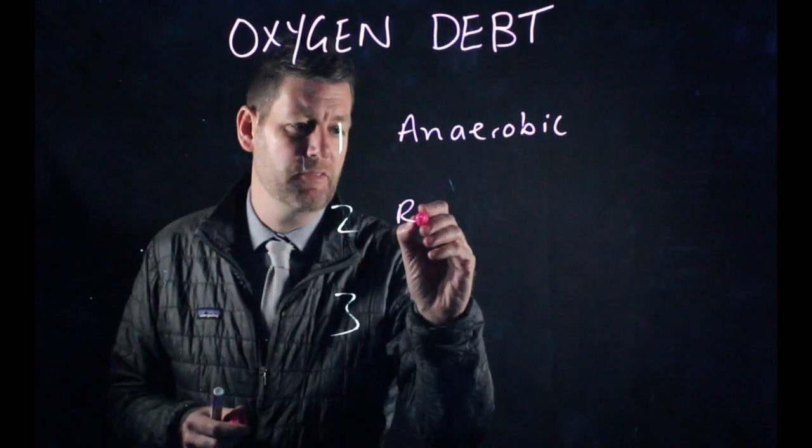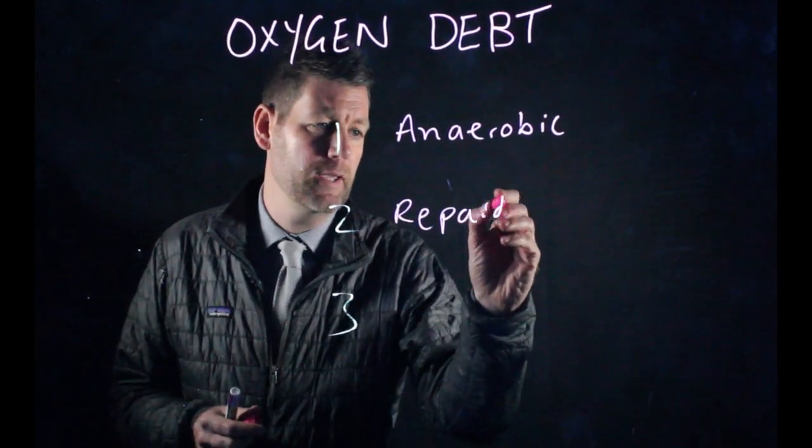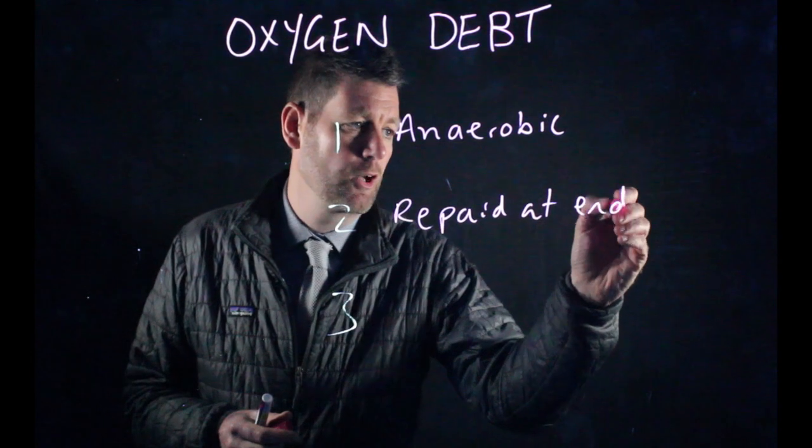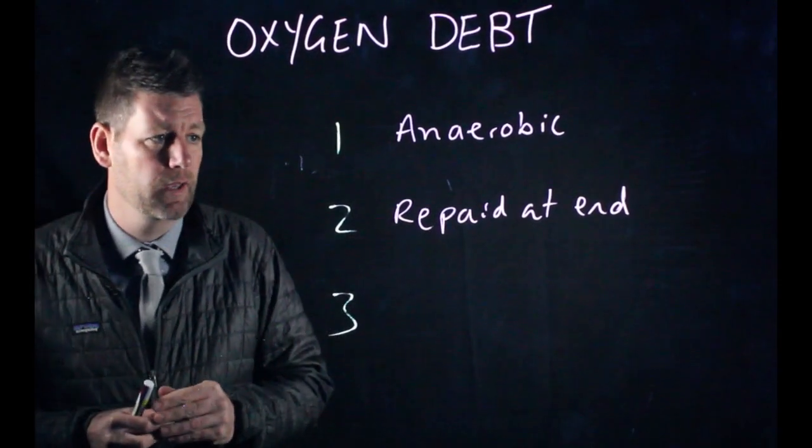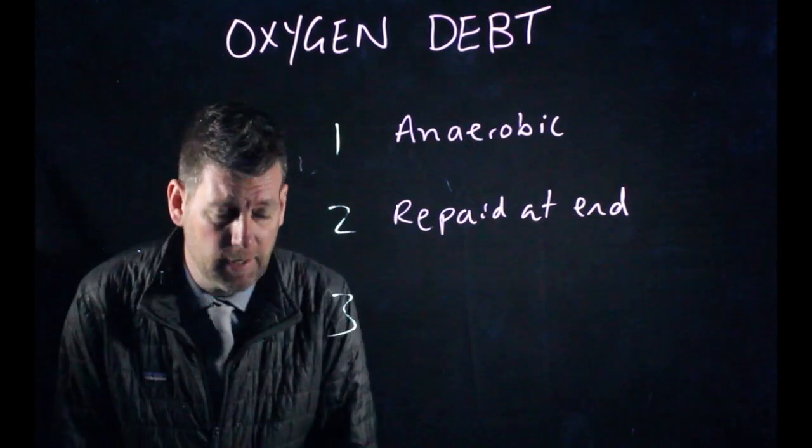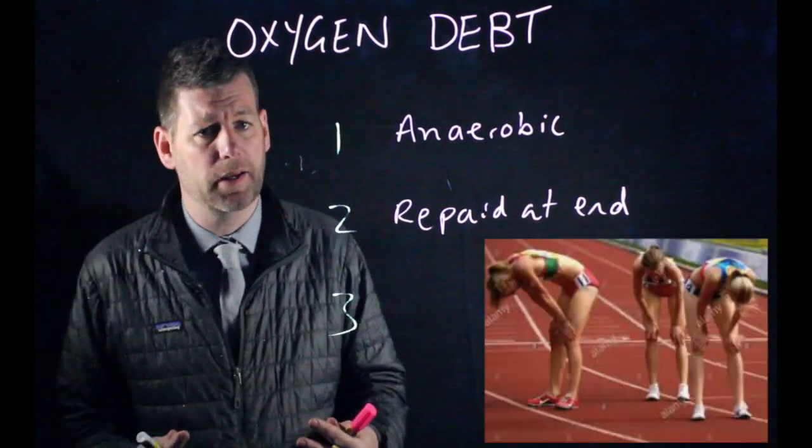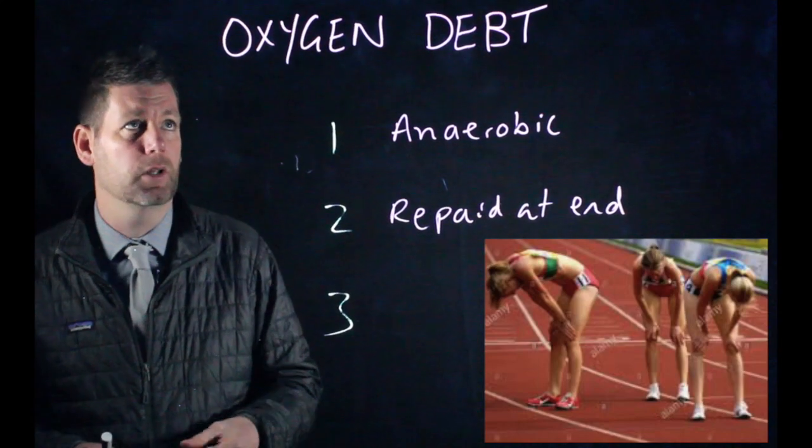The second mark is it's repaid at the end of activity. So it's repaid at the end. For example, a 400 meter runner runs, does a lap of the athletics track. The minute they finish, they're going to take deep breaths in and they're going to start repaying that oxygen that they owe the body because it's been working anaerobically.